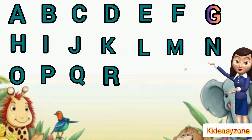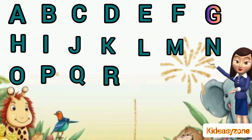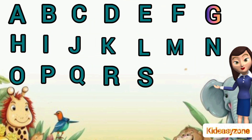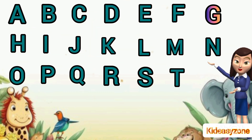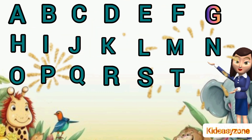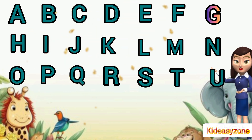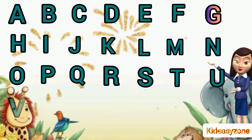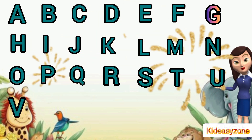R is for rose. S is for ship. T is for tiger. U is for umbrella. V is for van.